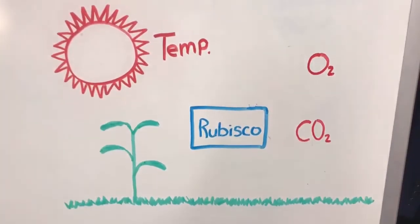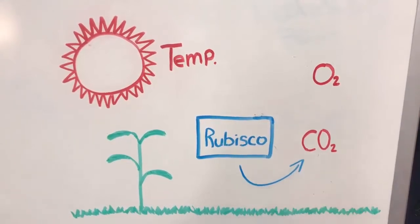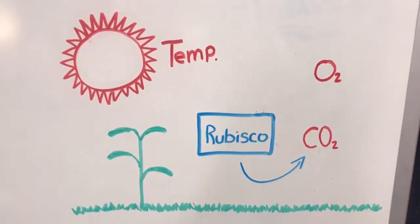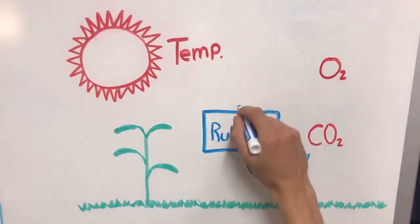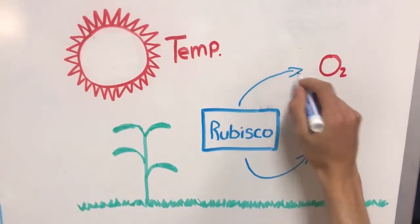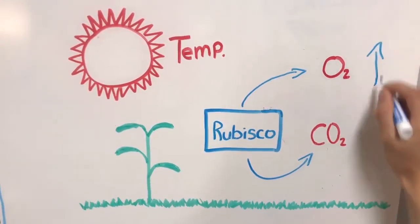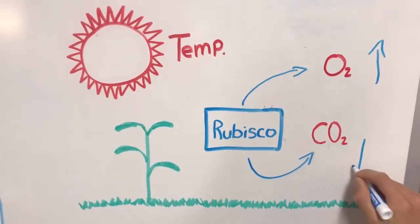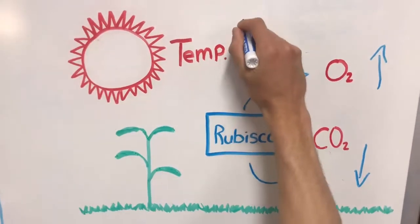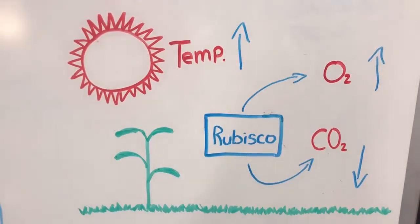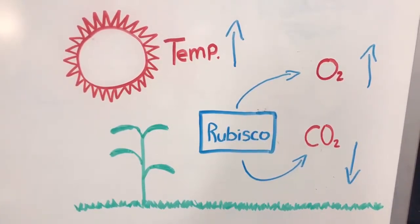When acting as a carboxylase, rubisco attacks carbon dioxide and leads to photosynthesis. Under normal environmental conditions, rubisco can also act as an oxygenase and attack oxygen. This happens when oxygen levels are high and carbon dioxide levels are low, and can also happen under high temperatures. When the oxygen levels become high enough, rubisco acts as an oxygenase and begins the process known as photorespiration.